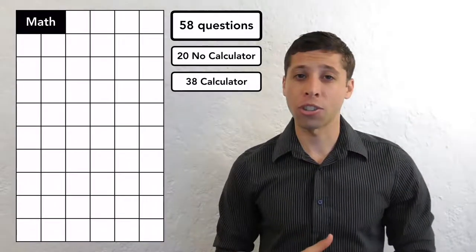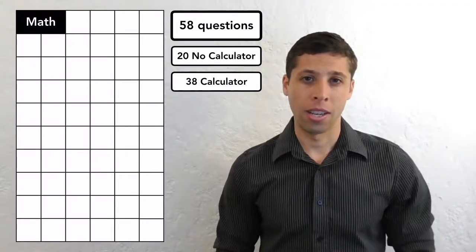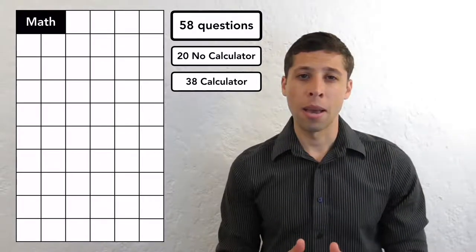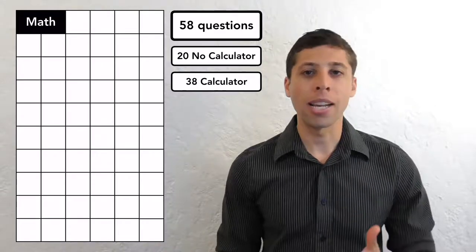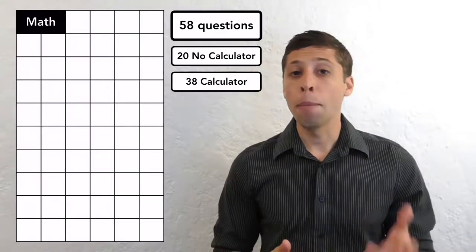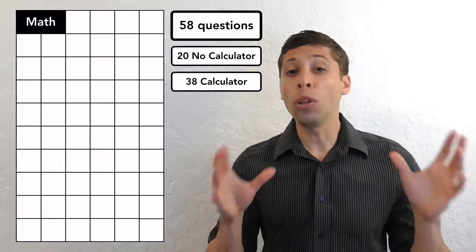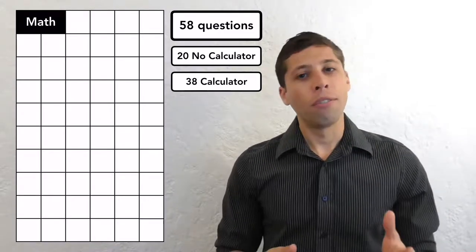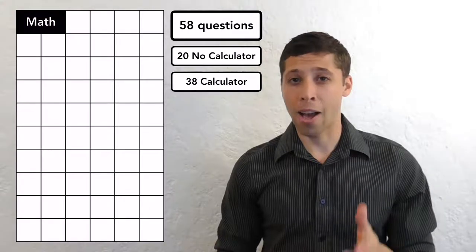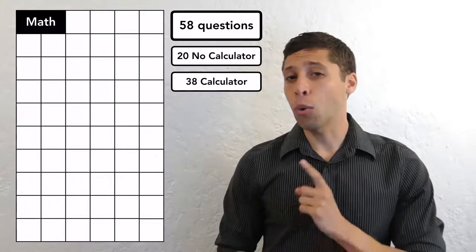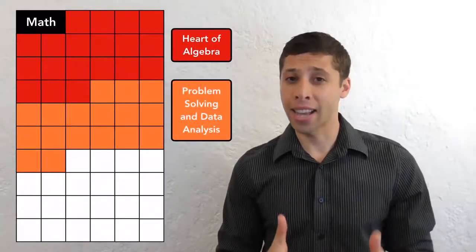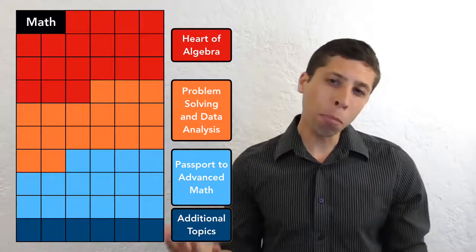The SAT math section consists of 58 questions — a 20-question no-calculator section and a 38-question calculator section. The College Board divides these 58 questions into four question types: Heart of Algebra, Problem Solving and Data Analysis, Passport to Advanced Math, and Additional Topics.